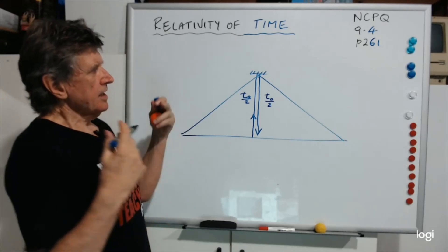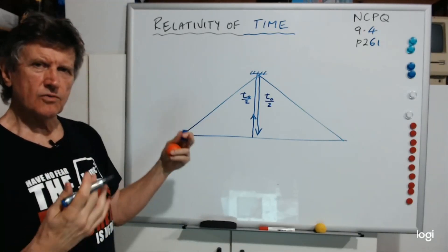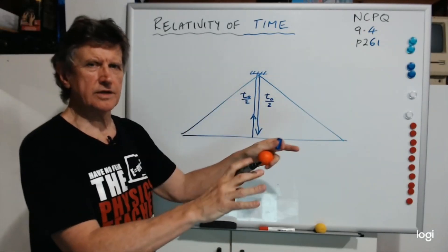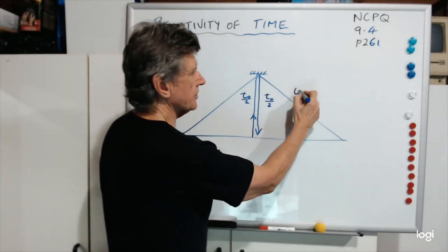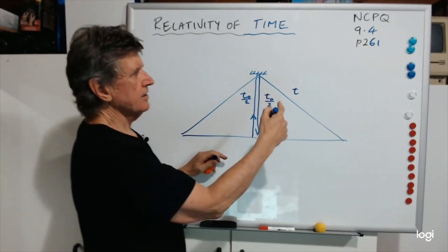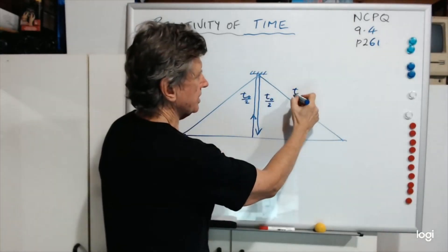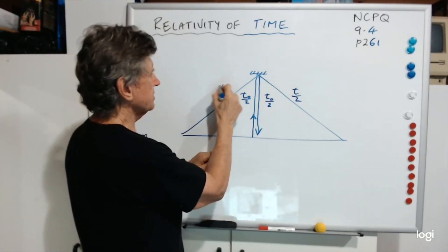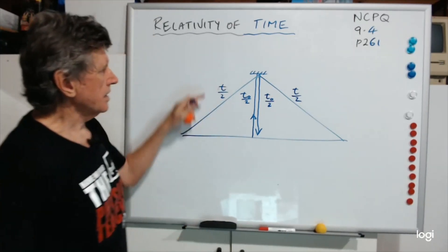Now that is moving relative to you — that event was moving relative to you. So you'd call the total time T. The total time is T, so this part of the journey would be T/2 and this would be T/2 as well.